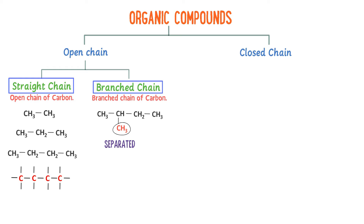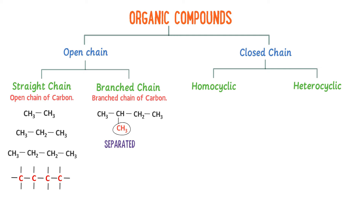Now, what about closed-chain organic compounds? Closed-chain organic compounds are divided into homocyclic and heterocyclic organic compounds. The word homo means same, so homocyclic are those organic compounds which are made up of only carbon atoms.